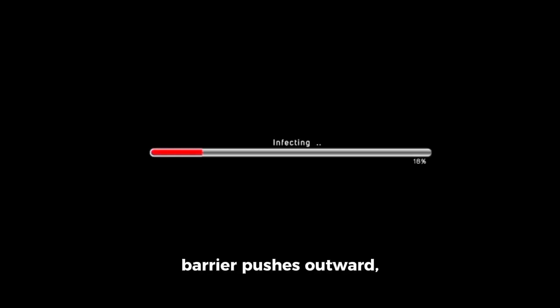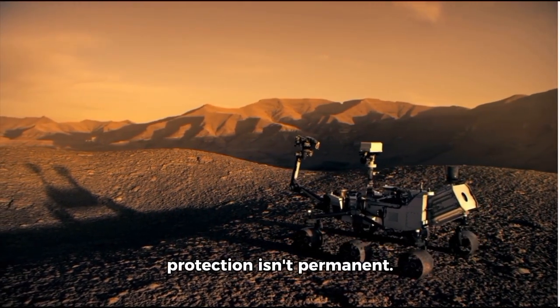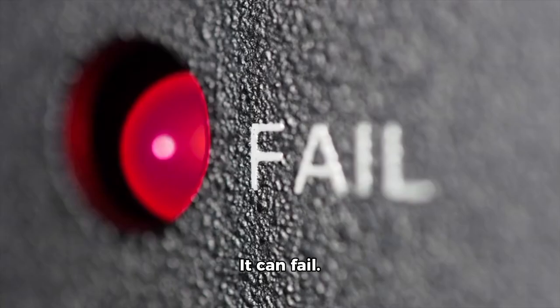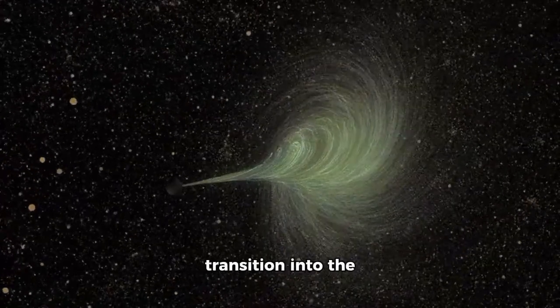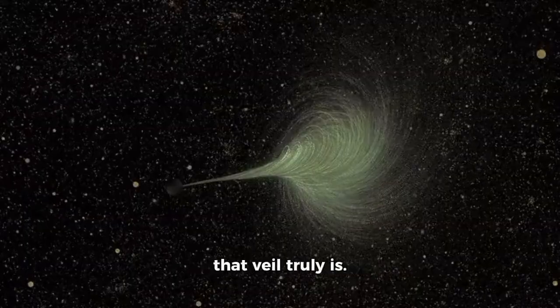If it strengthens, the barrier pushes outward, shielding us more effectively. The implication is disturbing. Earth's protection isn't permanent. It shifts. It can fail. And Voyager 2's sharp transition into the galactic medium revealed just how thin that veil truly is.